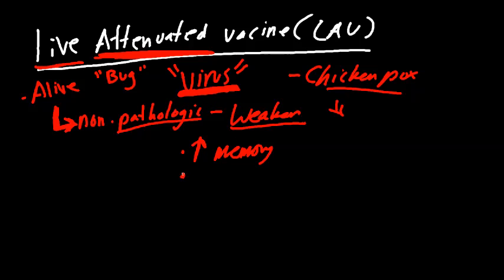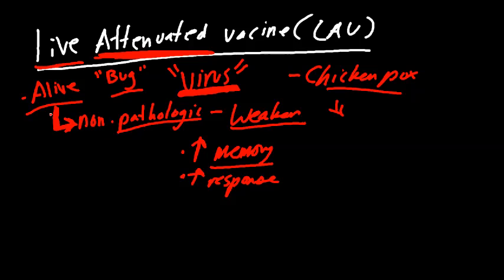But instead, everything else is still there. We still have an alive bug that's non-pathologic, so our body is going to mount a really good immunity — we're going to have an increased response. Some vaccines just have little parts of a bug, and your immune system will recognize those parts. But right now we're introducing the whole virus — its capsule, its DNA — a live bug. And as a result, we're going to have a really strong, robust response.